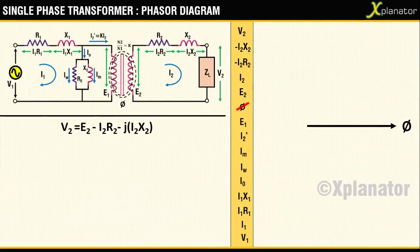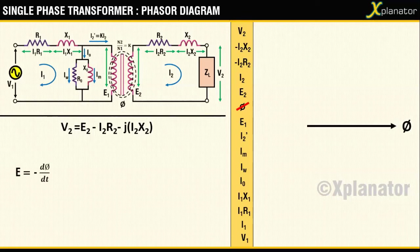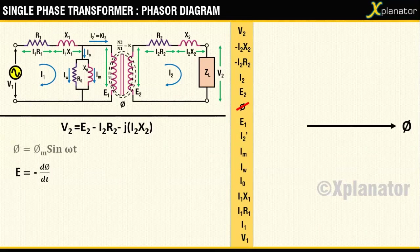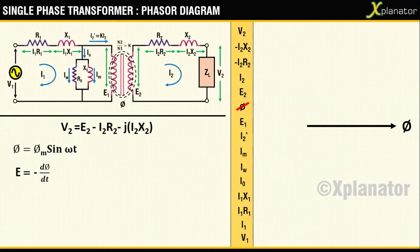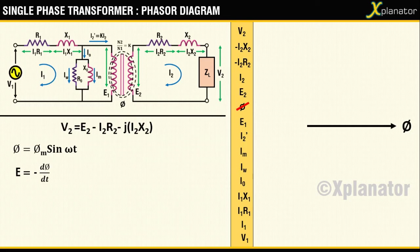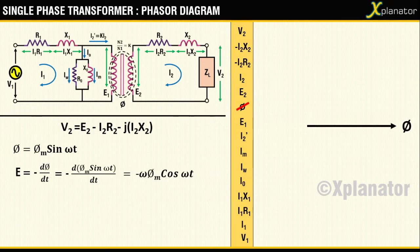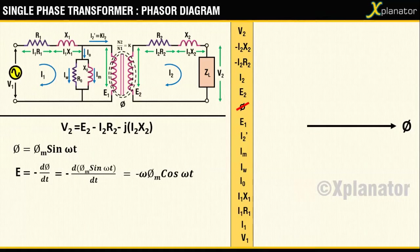However, according to Lenz's law, E equals minus d(Phi)/dt. If the flux flowing in the transformer core is given as Phi equals Phi_M sin(omega t), then the induced EMF E can be written as minus omega Phi_M cos(omega t). Rearranging the terms in sine form, you will get omega Phi_M sin(omega t minus pi/2).